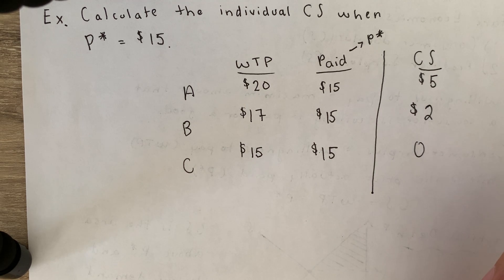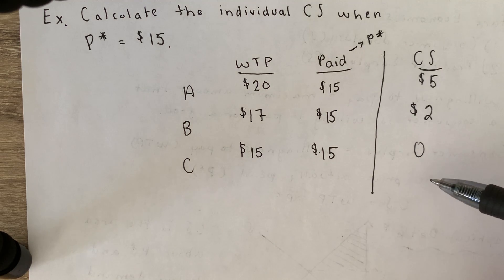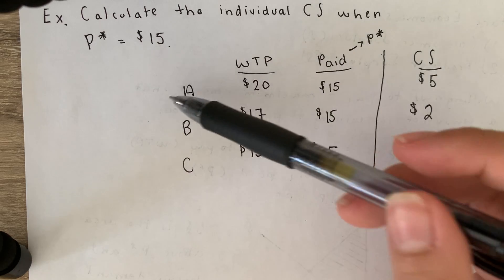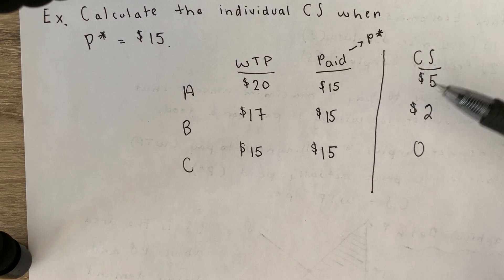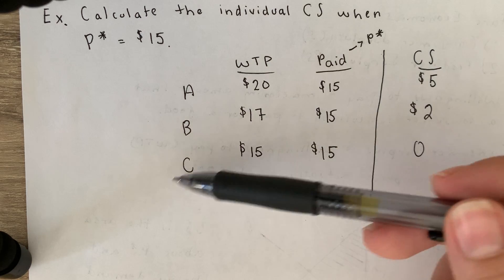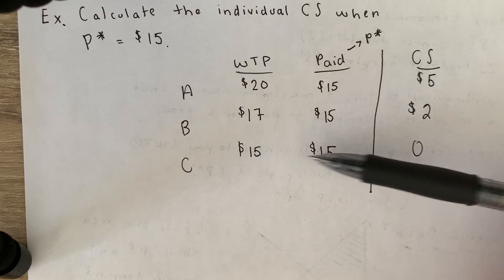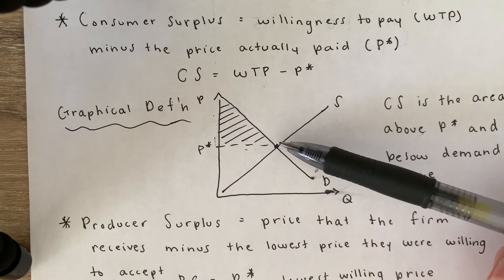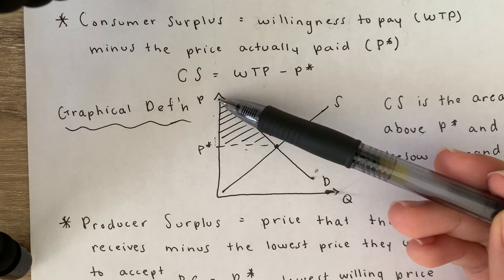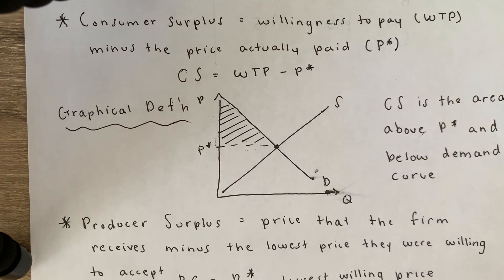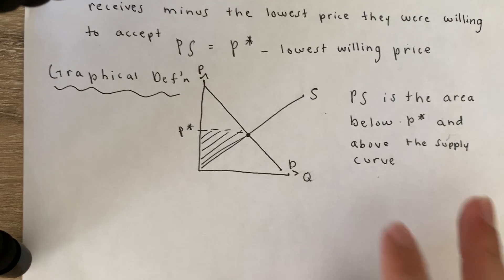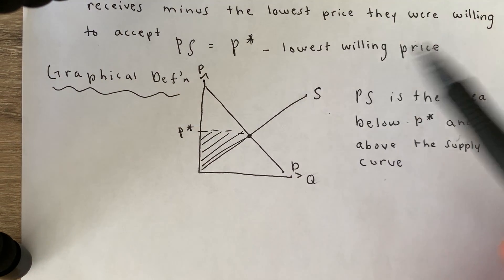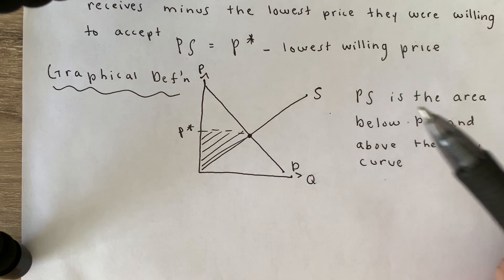If you wanted to find the market consumer surplus, you would add these individual surpluses together. Individual A has a consumer surplus of $5, individual B has $2, and C has none. Be aware of these formulas and the graphical regions. Later you'll calculate the actual triangle area, and remember producer surplus is the area below P star and above the supply curve. Hopefully this was helpful.